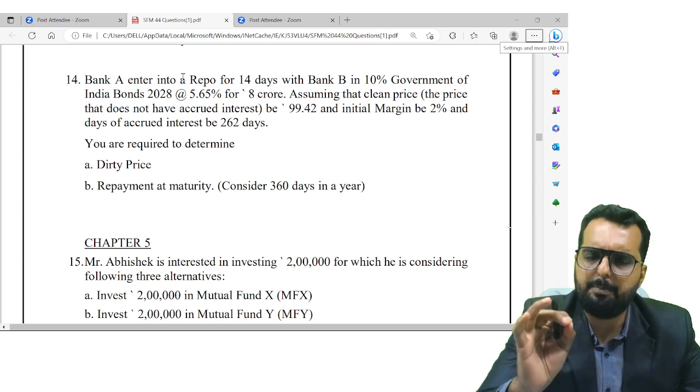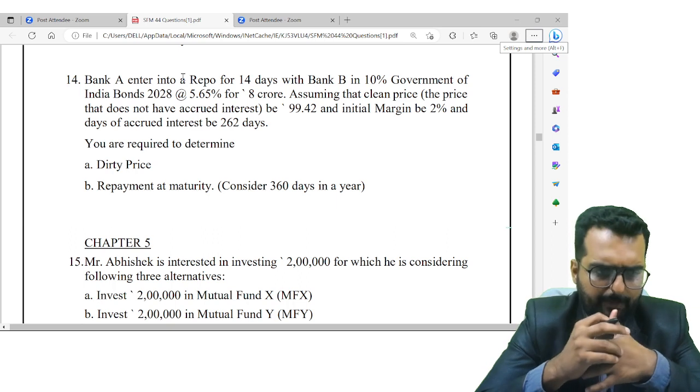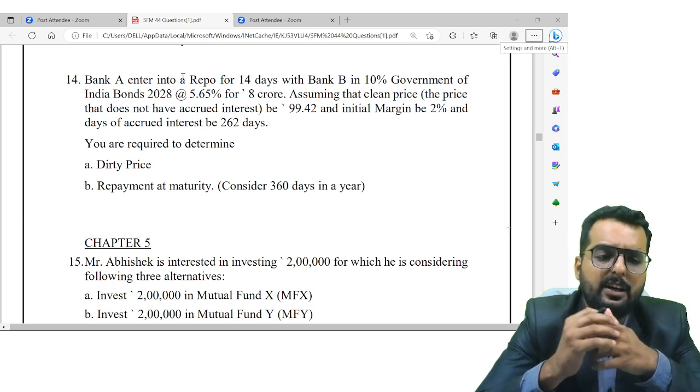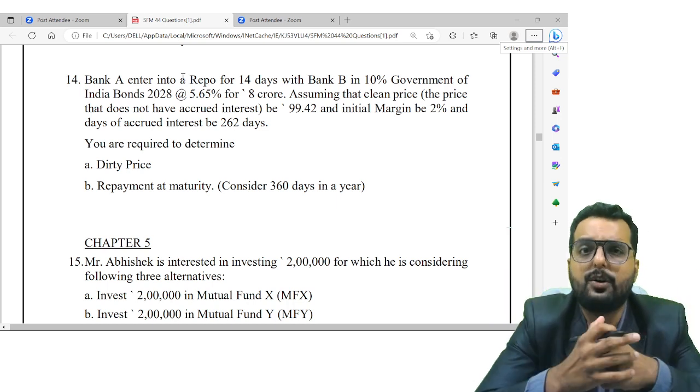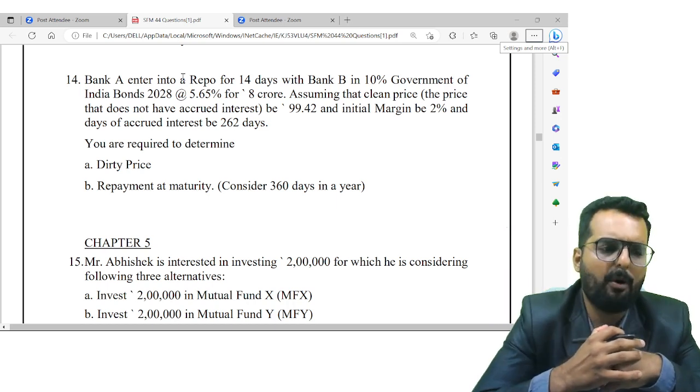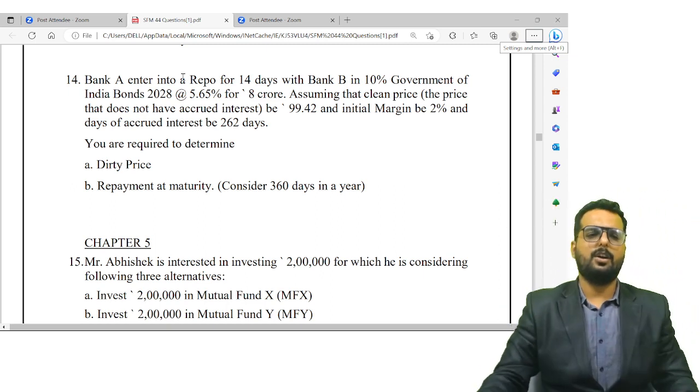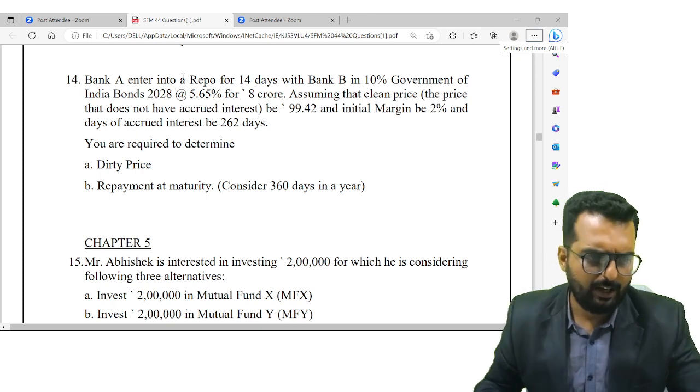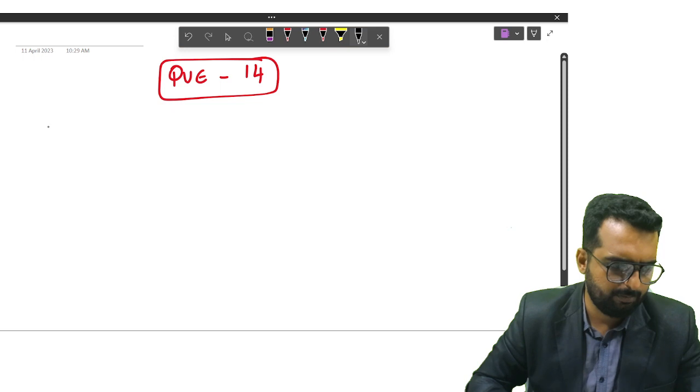Friends, in simple terms, repo is nothing but the loan that is given by one bank to another bank. So if bank A has entered into a loan with bank B on the basis of a security, what is the security over here? 10% GOI bonds are the security at the rate of 5.65% for 8 crore. So I will draw a diagram now to understand this better.